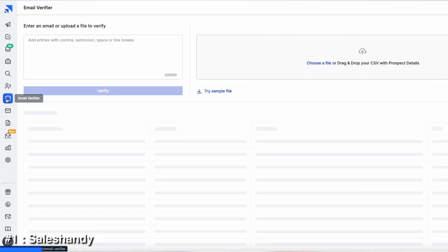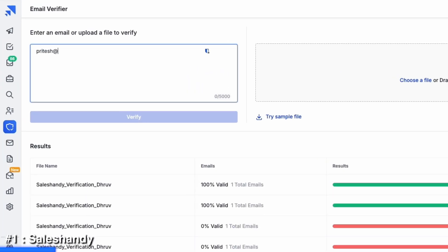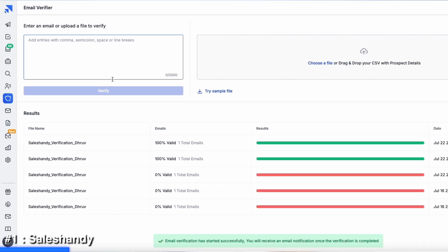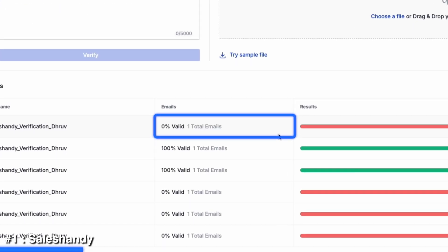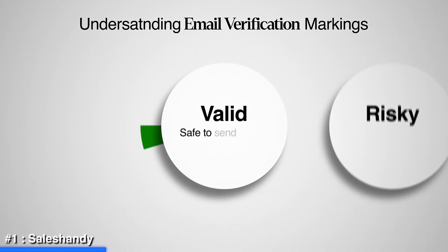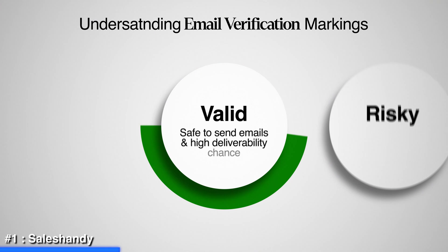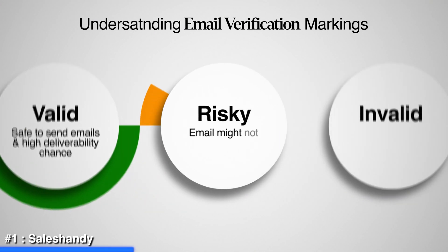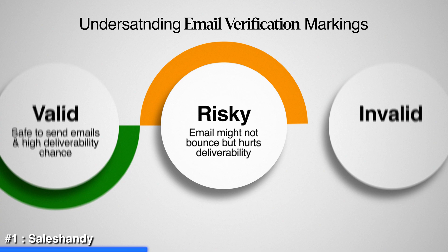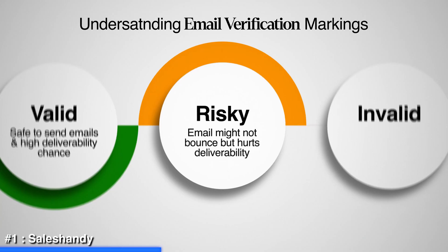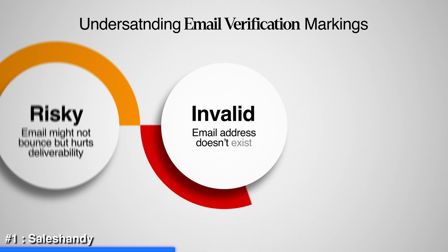First up, let's talk about SalesHandy's email verifier. It is simple, fast, reliable, and actually built with cold emailers in mind. You use it in two simple steps: type in the email address you want to verify, then click verify email. Within seconds you'll see whether that email is marked as valid, risky, or invalid. Valid means it's safe to send and has a high chance of landing in the inbox. Risky means it might not bounce but could still hurt your deliverability, so you should refrain from using those. Invalid means the email address does not exist or will definitely bounce, so you should definitely not use it.